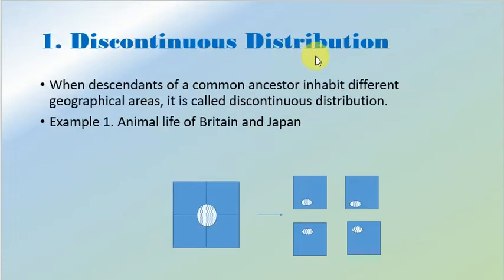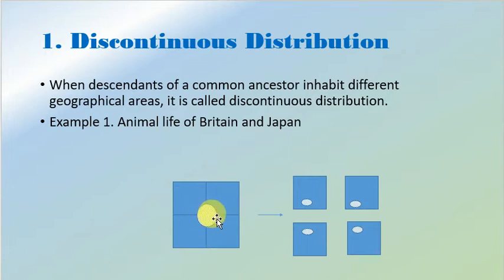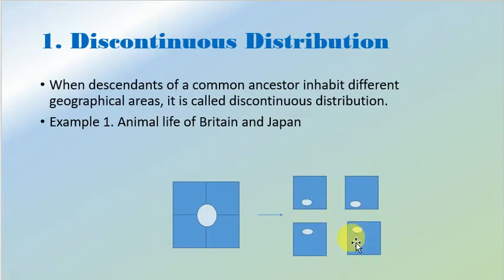First of all, we will study discontinuous distribution. What is the discontinuous distribution? The distribution which is not continuous in a single continent. In this image, we can see that this blue mass represents the single earth unit, and this blue dot represents a particular species of the plant. When this earth was divided into different continents, this species of the plant also gets distributed into the different continents. This kind of distribution is known as discontinuous distribution. When descendants or the progenies of a common ancestor inhabit different geographical areas, it is called discontinuous distribution.